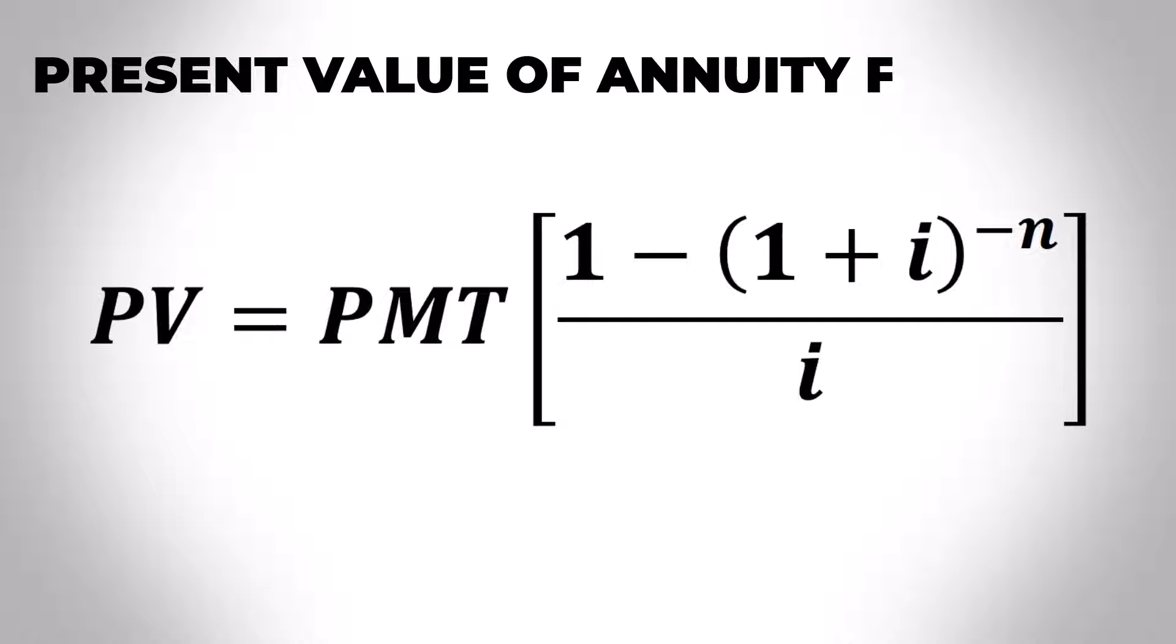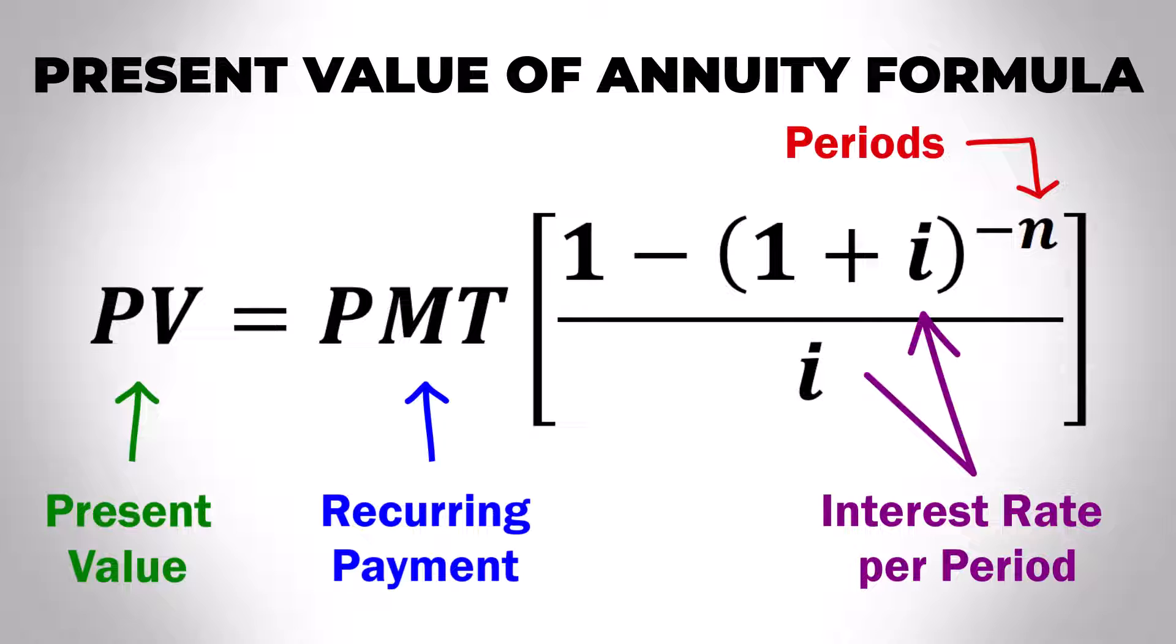The present value of annuity formula is the calculation method used to determine the current worth of all future cash flows associated with a loan, discounted back to the present moment.